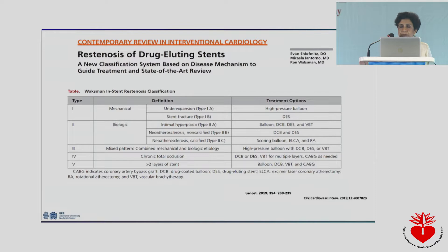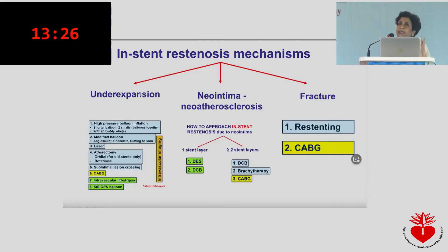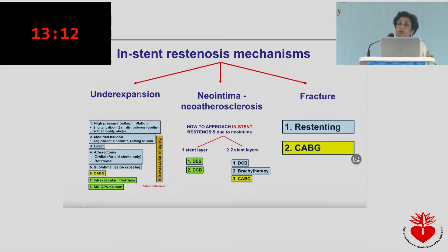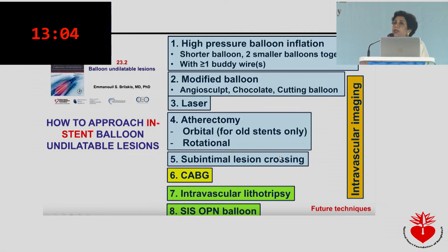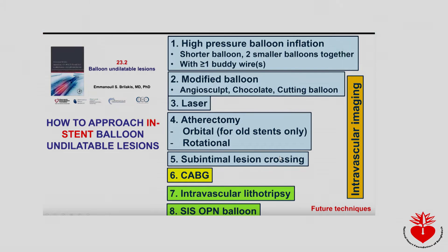When we get a calcified in-stent restenosis, how do we treat it? First, we need to ascertain the underlying cause. Imaging is invaluable here — only when we are sure about what the underlying cause is and how severe it is can we treat it properly. If it is calcified in-stent restenosis, we first identify it and then do a proper job of preparing the lesion.